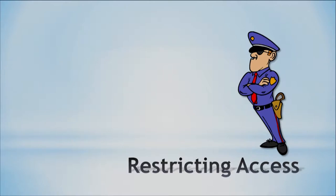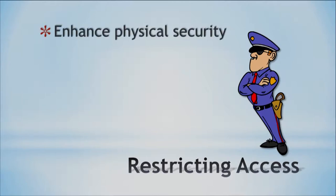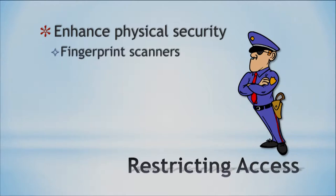First I'm going to talk about restricting access. The first thing we can think of is physical security, which is the hardware side. For this I'll give you a couple of examples: fingerprint scanners and iris scanners. Fingerprint scanners we're already well-versed on — many computers nowadays can scan your fingerprint, which is quite convenient. Iris scanners are a little more sophisticated, so we don't see them in everyday hardware yet; we see them in different offices.